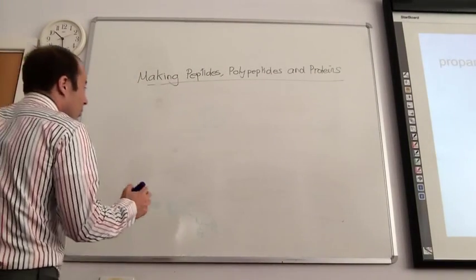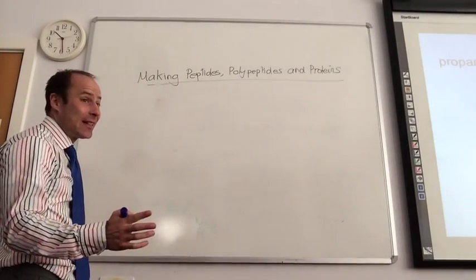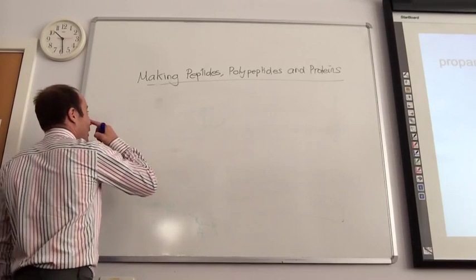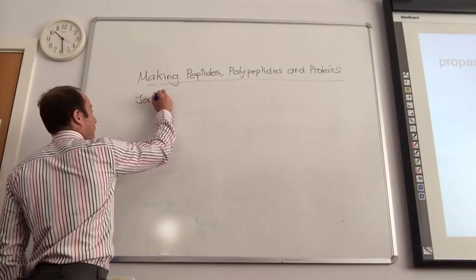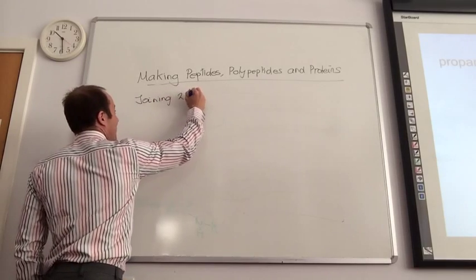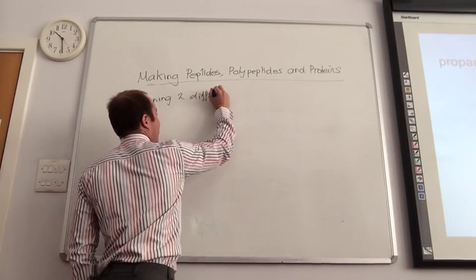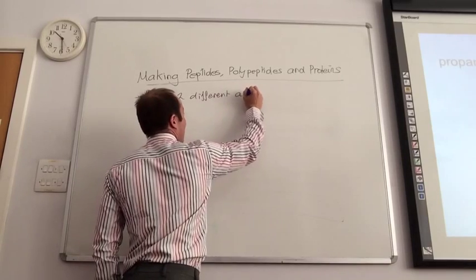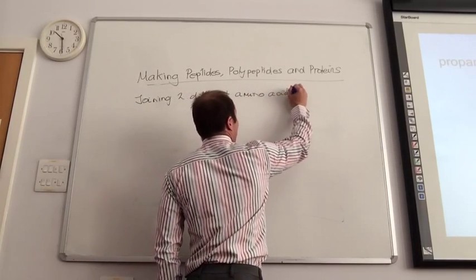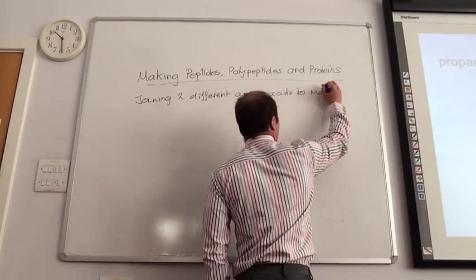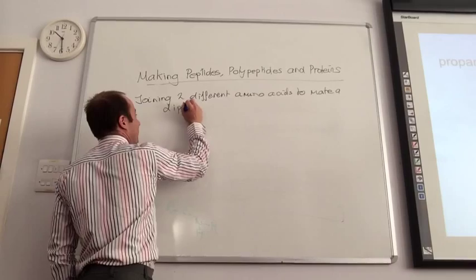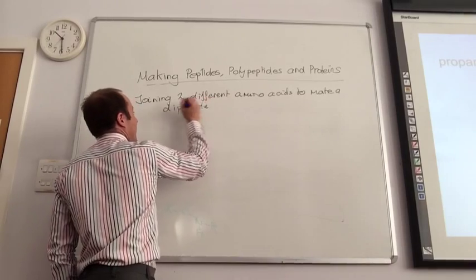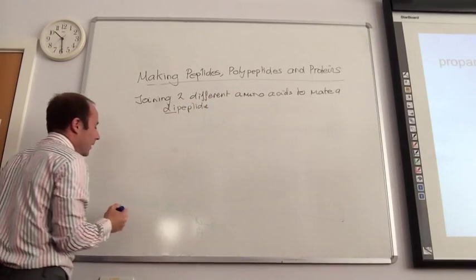So we're now going to join two different amino acids together. I'm going to react, so join in two different amino acids to make a di-peptide. Di means two. So here we go.